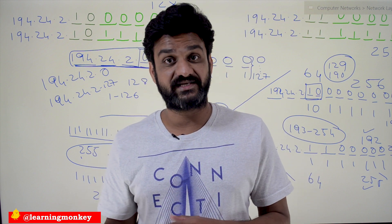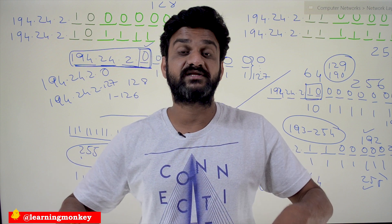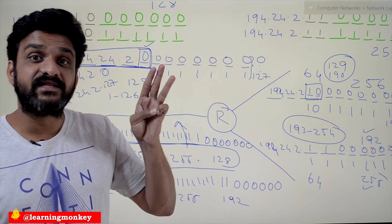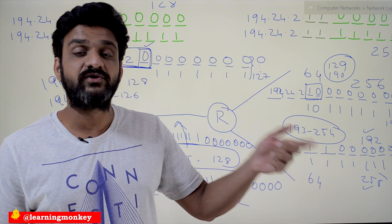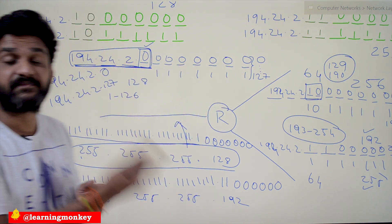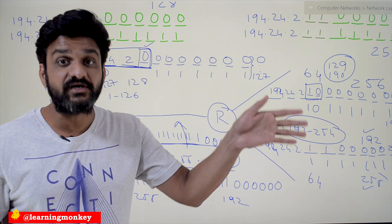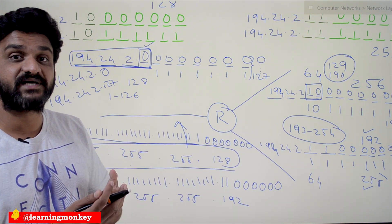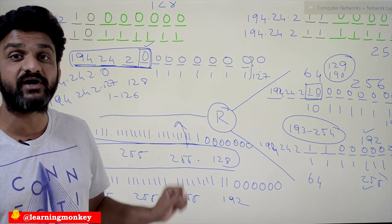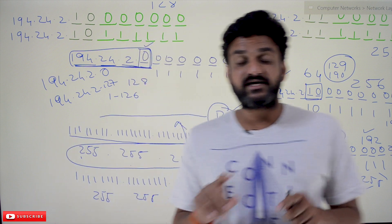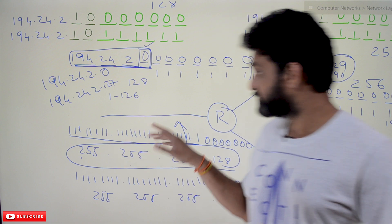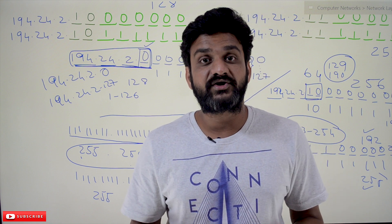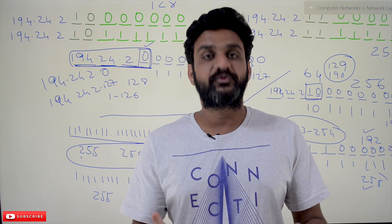The routing table will have three entries. The first network ID is 194.24.2.0 with subnet mask 255.255.255.128. For the remaining two networks, the subnet mask is 255.255.255.192. For practice, try to draw the routing table with columns for network ID, subnet mask, and interface — imagine your own interfaces and create your own routing table. Hope you got clarity on this concept.